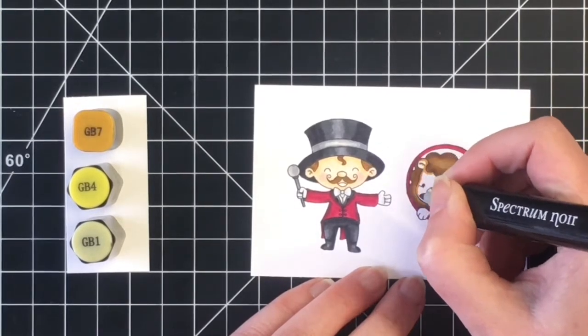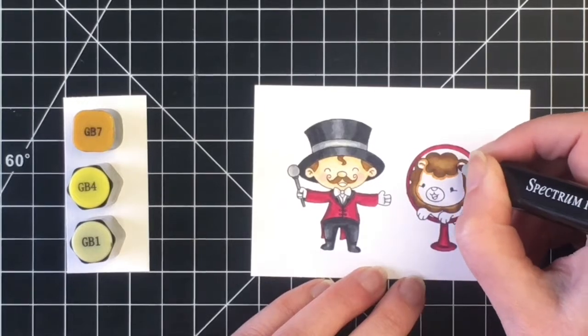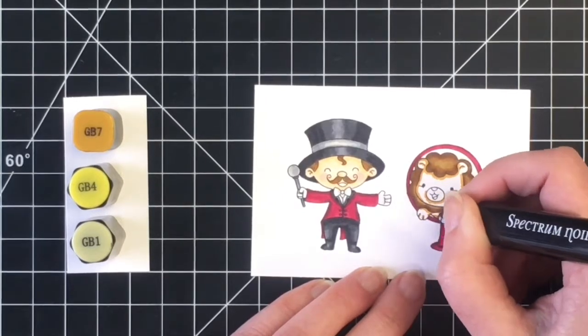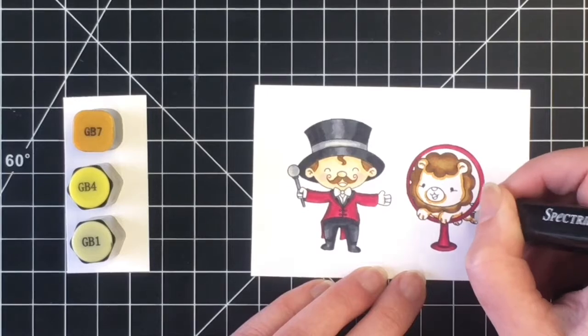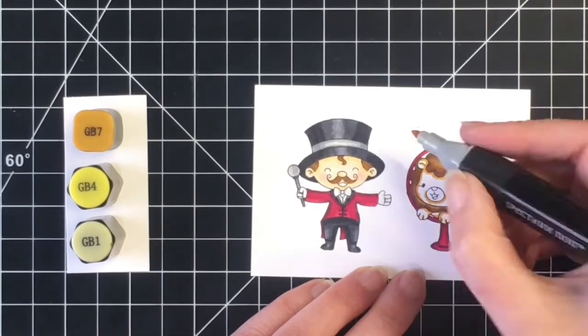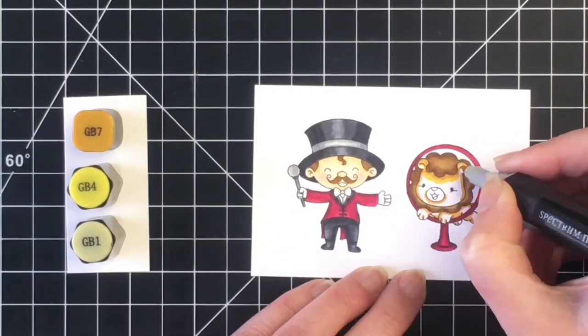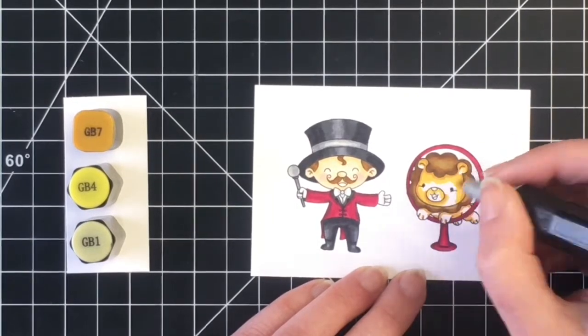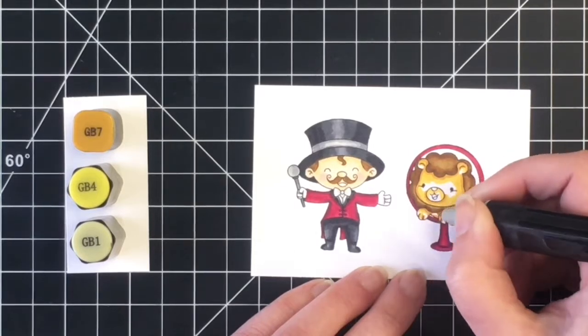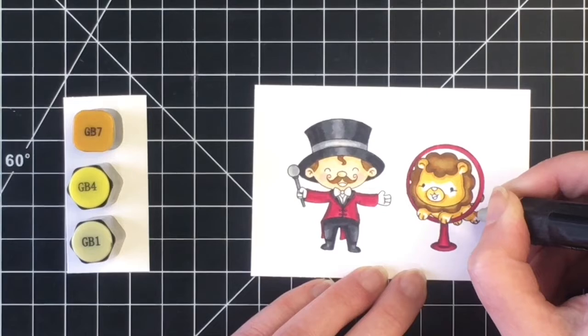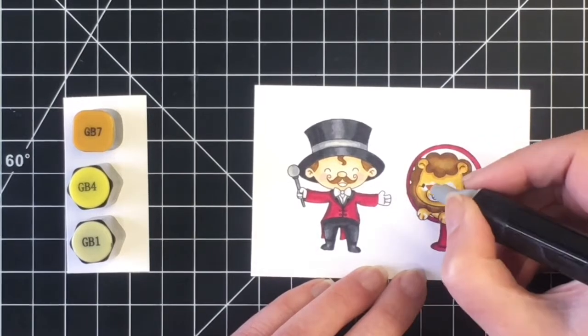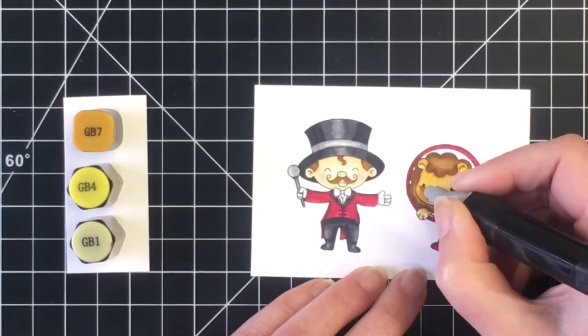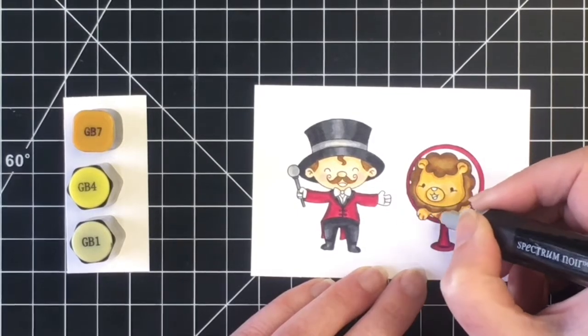So now we're going to move on to the body of our little lion here. So I'm using GB7, GB4, and GB1. Laying that GB7 down around the side of his face where his little mane is, and also underneath his muzzle. It's going to be quite a bit darker on his lower body because his mane is going to cast a shadow. So I just made sure to add a lot of that darker marker down there. Coming in now with the GB4, extending that color, really blending that out. These colors blend very well together so it's not challenging at all to get them to blend smoothly. He's looking so cute after being all colored up.